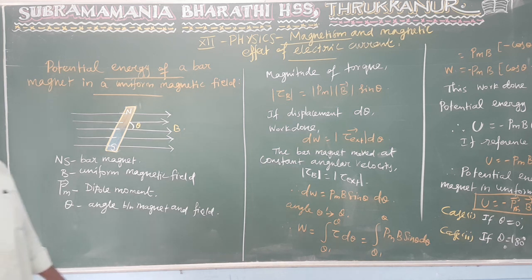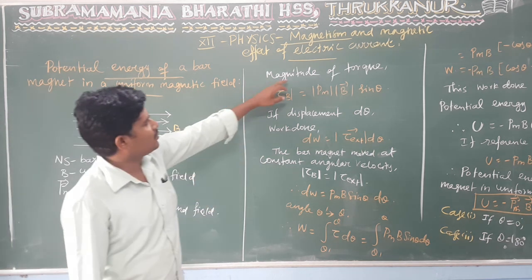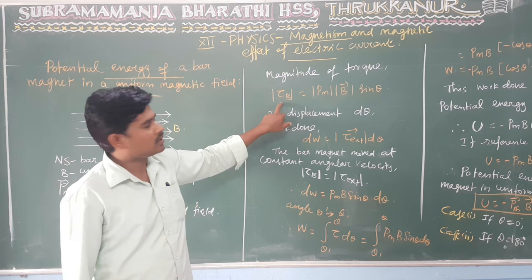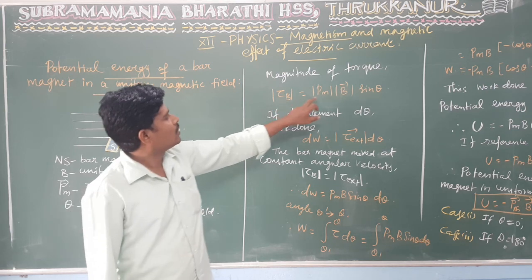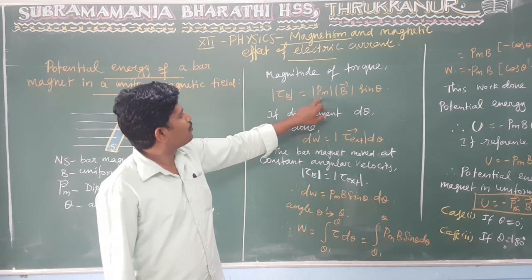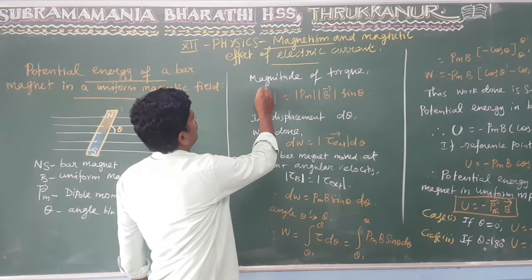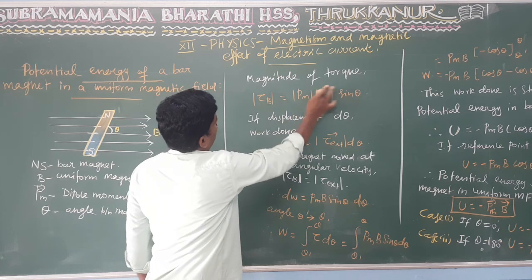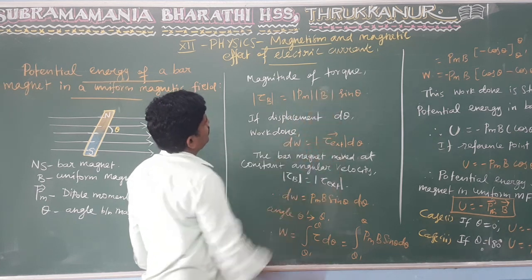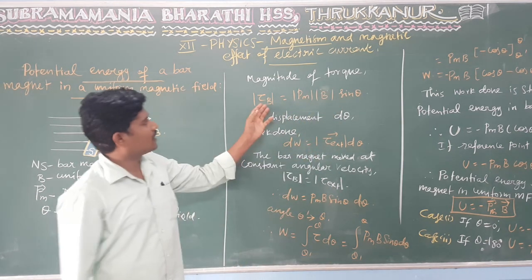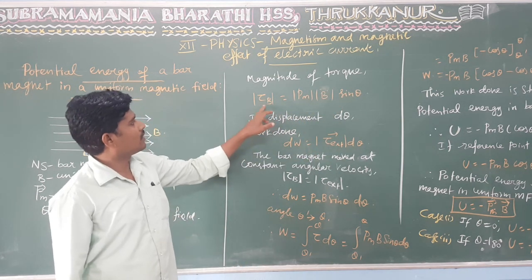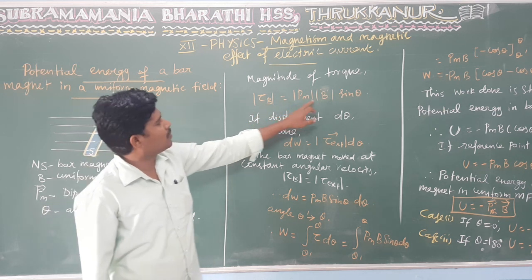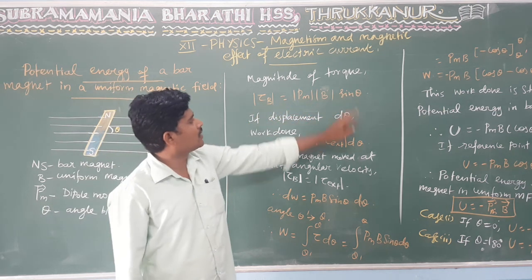The magnitude of torque tau is equal to PM — this is a vector — cross B — also a vector — and the result is a scalar. So tau is equal to PM·B·sin θ.